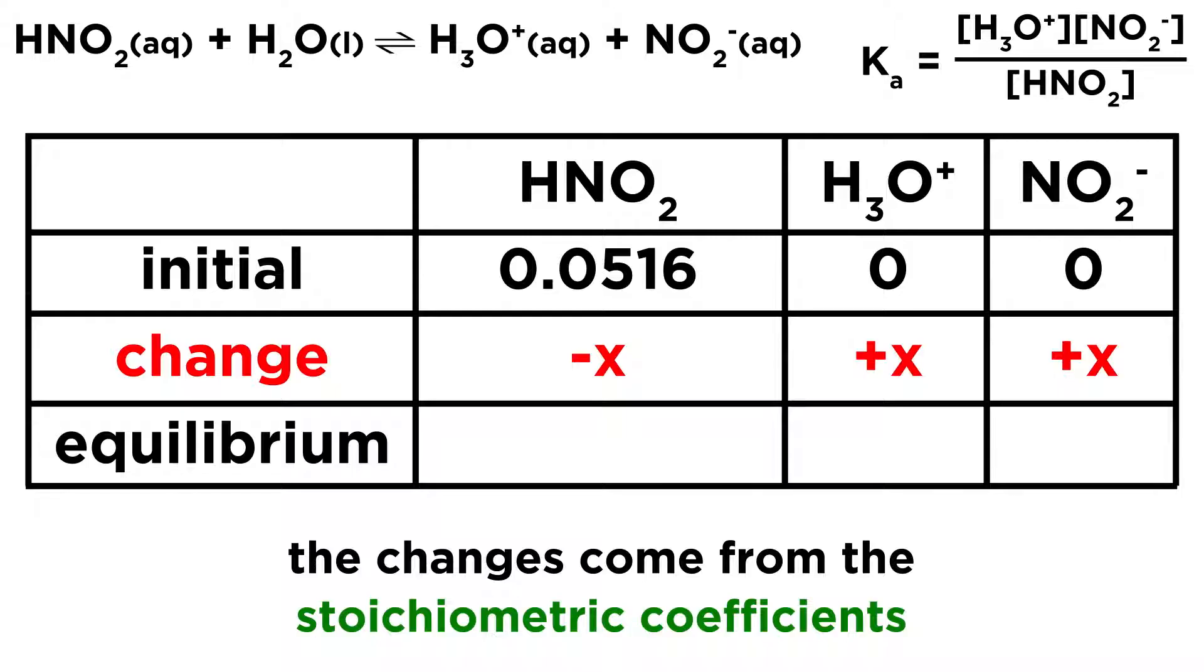Let's also make sure to understand that these come from the stoichiometric coefficients. We have minus 1X and plus 1X and plus 1X, because we have a 1 to 1 to 1 ratio for the stoichiometric coefficients from the balanced equation. If those had different coefficients, if we had two hydroniums in the balanced equation, we would have to have plus 2X in the change box for hydronium. But everything is 1 to 1 to 1, so those are going to be the change values.